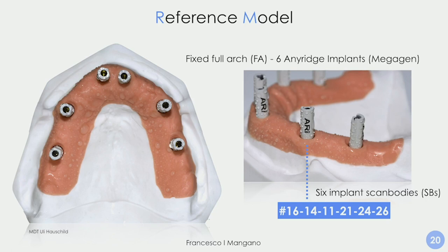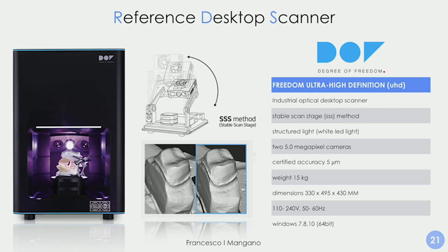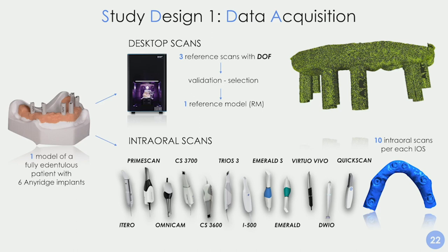These 12 scanners are totally different in terms of acquisition technology and output file format — some use structured light, some use laser. We wanted to understand which are the most suitable devices for full arch impression. My friend Uli Ocean, a dental technician, prepared a beautiful model with MegaGen implant components — specifically the AnyRidge implant system — with six scan bodies, 13mm, in peek material. This model was scanned with a very powerful desktop scanner as a reference, to obtain reference files to compare against the files captured with the different intraoral scanners. I captured in person 10 different full arch scans with each intraoral scanner.